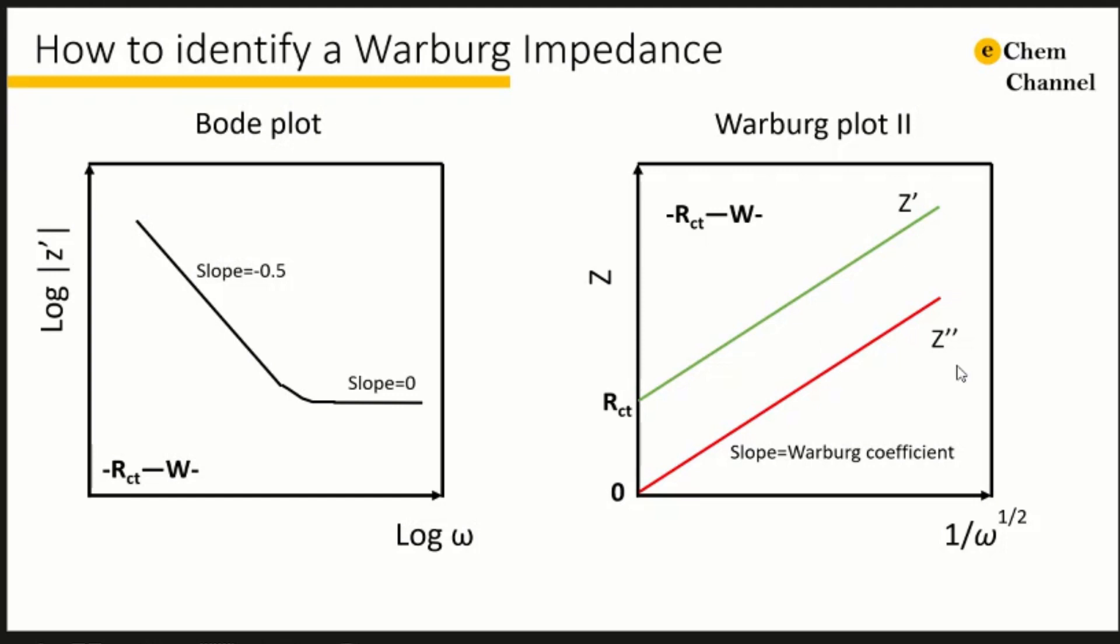The line for the imaginary component Z double prime shown in red should intersect the Z axis at 0, while the intercept for the real component Z prime shown in green is the charge transfer resistance.